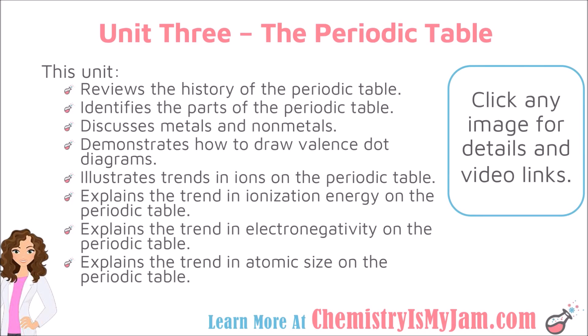This unit is going to review the history of the Periodic Table. We'll look at the parts of the Periodic Table, the differences between metals and nonmetals. We'll learn to draw valence dot diagrams and illustrate trends in the Periodic Table. Those trends will include ionization energy, electronegativity, and atomic size. Let's get started with the history of the Periodic Table.